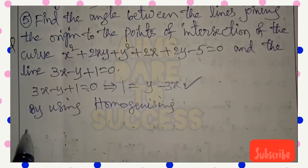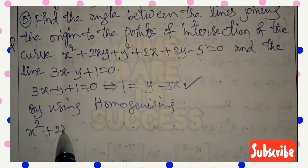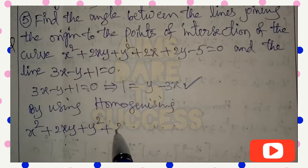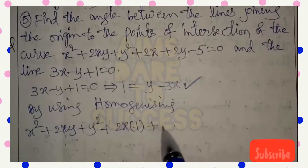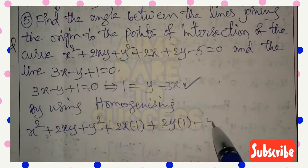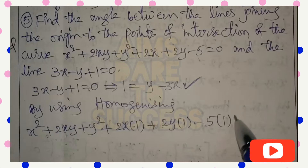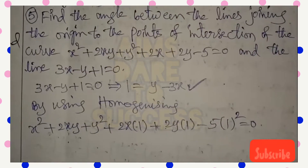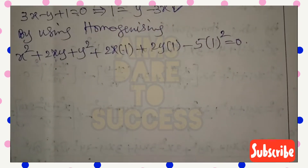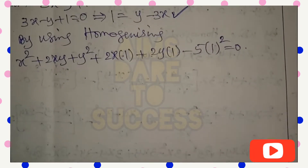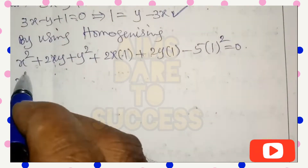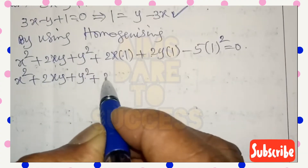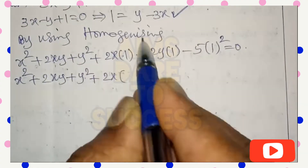Now we apply the homogenizing concept. In homogenizing, the x², xy, y² terms remain as they are; the x and y terms are multiplied by 1, and the constant term is multiplied by 1 whole squared. Applying homogenizing to the given curve, we get x² + 2xy + y² + 2x·(1) + 2y·(1) - 5·(1)² = 0, where 1 = y - 3x.